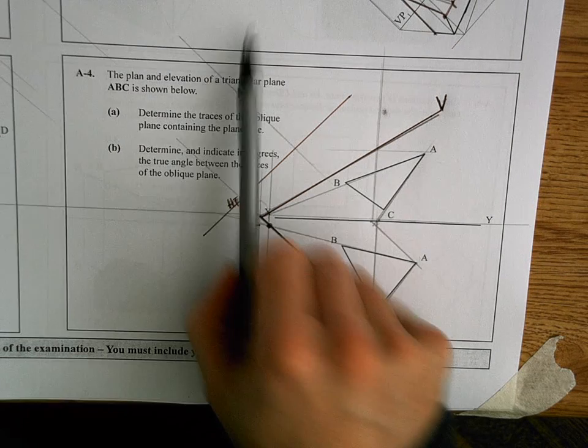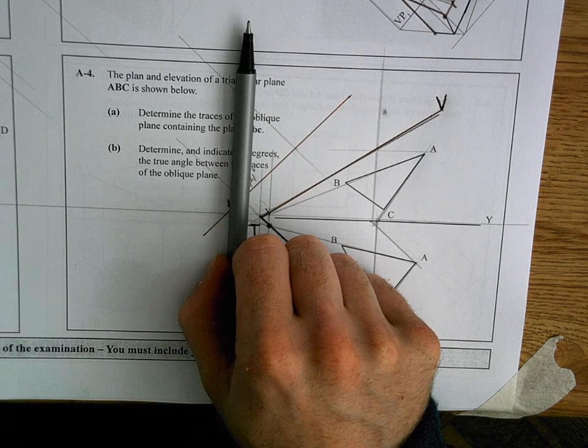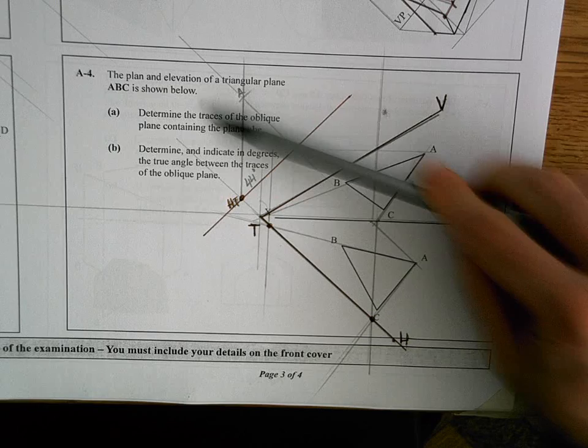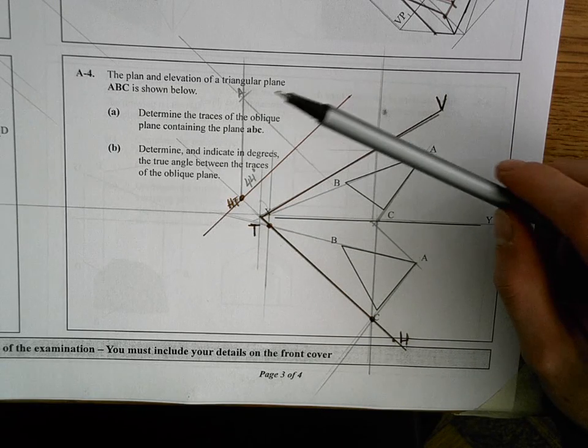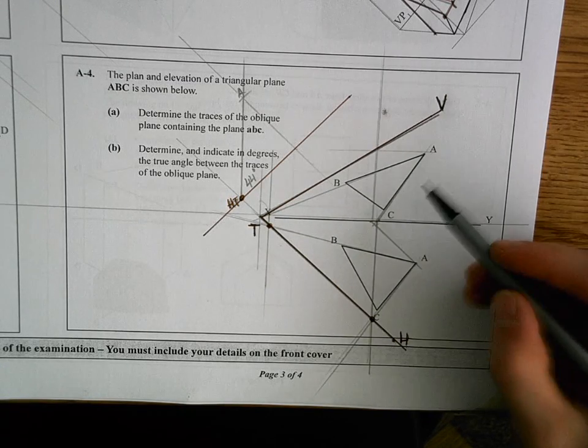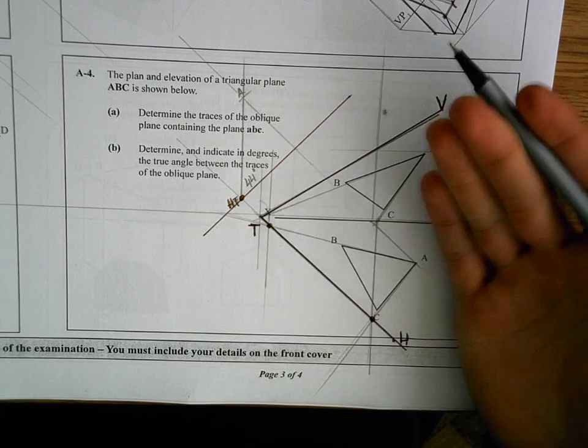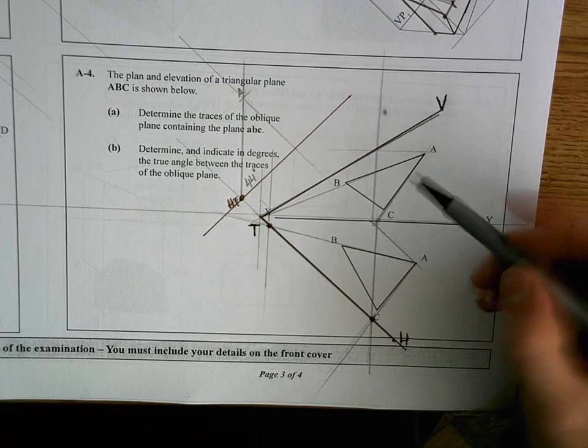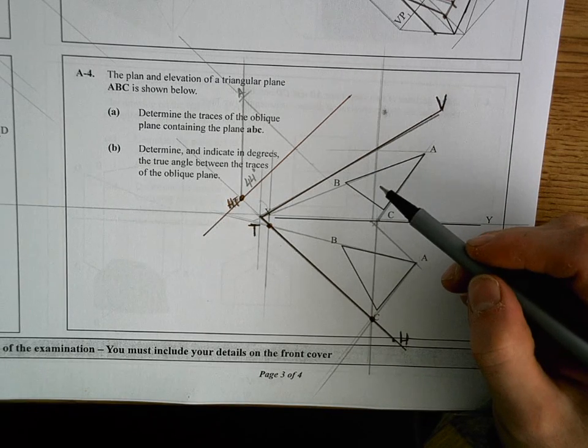Now in order to get an angle here that I can actually measure, I have to have a point up above ground height at some stage. If I look at my plane, A, B, C, that's what this thing was slapped on top of in the first place. So all of those three points are on my oblique plane. So I can pick any of them.